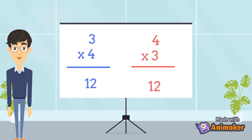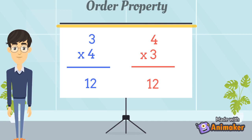Now let us multiply two numbers, three and four. If I multiply the number three with four, I get the result as twelve. And if I multiply four with three, I get the same result, twelve. The product of two numbers does not change when the order of the numbers is changed. This property is known as the order property of multiplication.